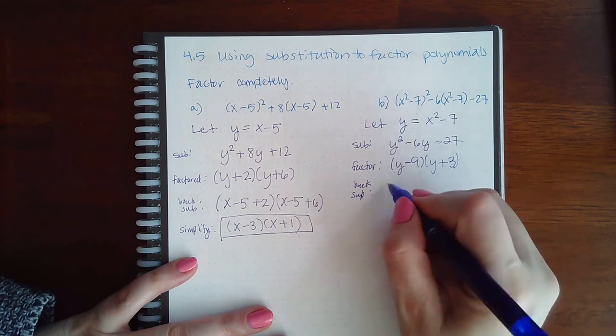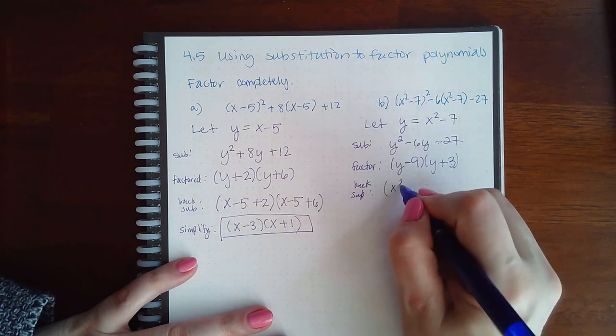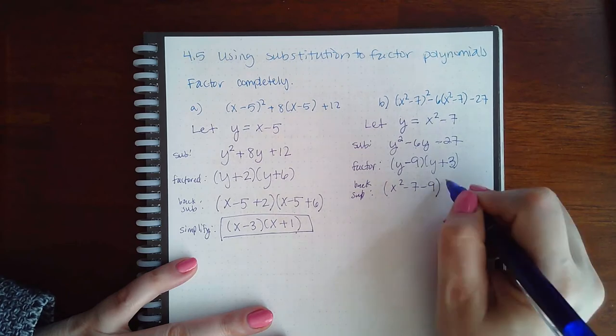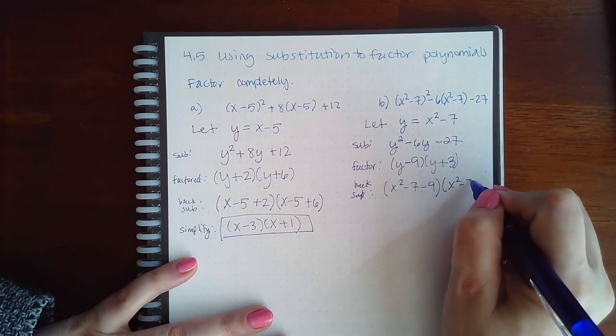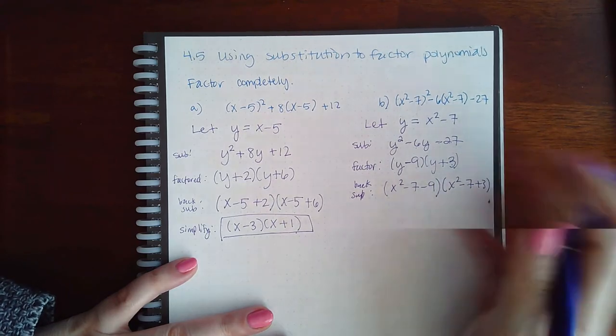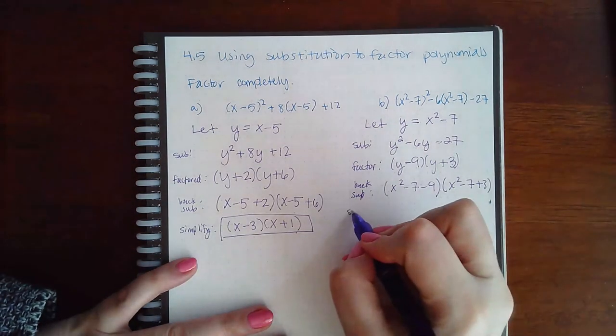And so when I back sub, y was x squared minus 7, and then the minus 9. y was x squared minus 7, and then the plus 3. And so if I simplify this...